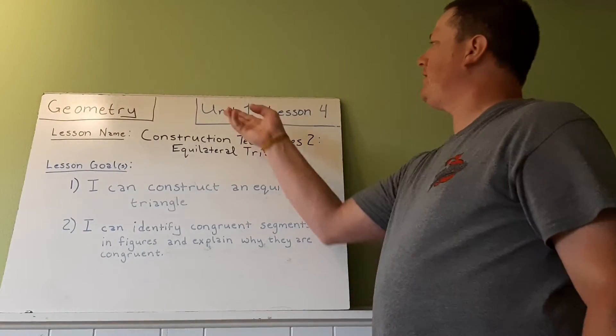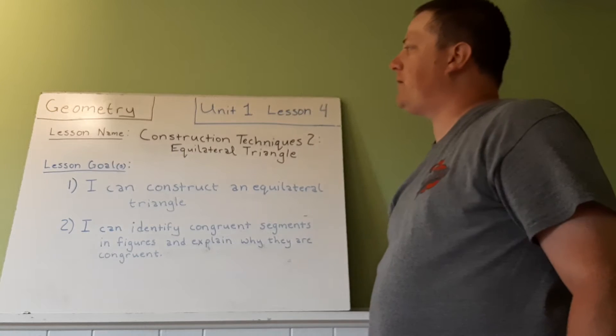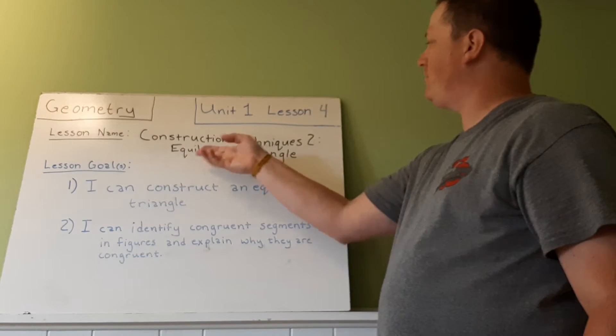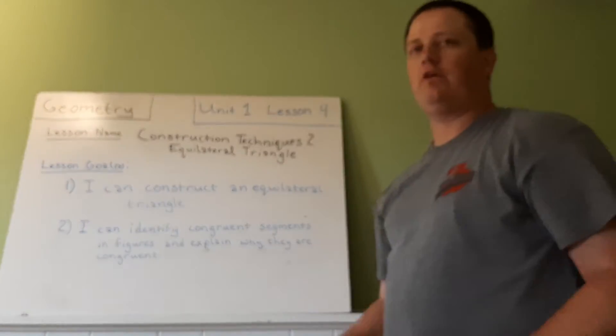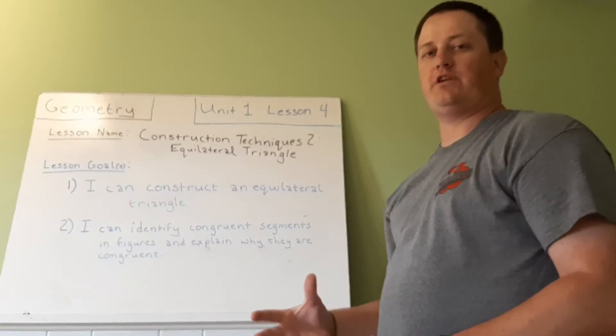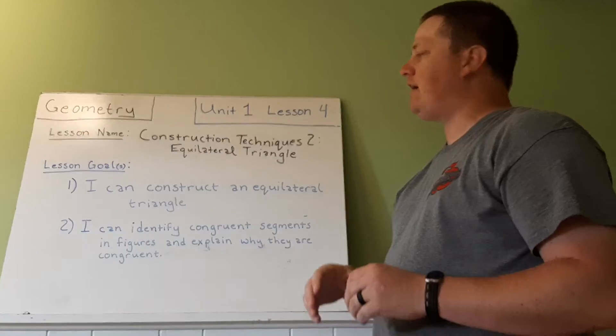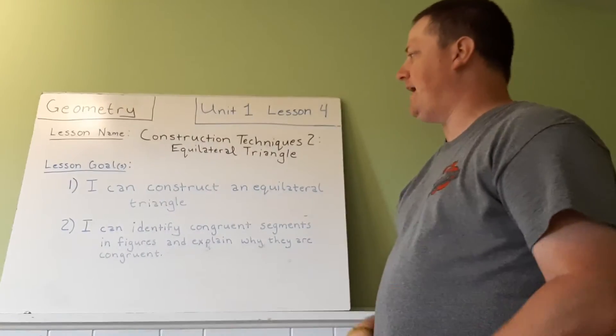Alright geometry students, we're going to look at Unit 1, Lesson 4. The lesson name is Construction Techniques to Equilateral Triangle. We're going to be using our construction knowledge to create a triangle with three equal sides.